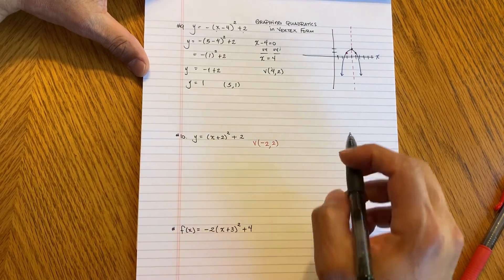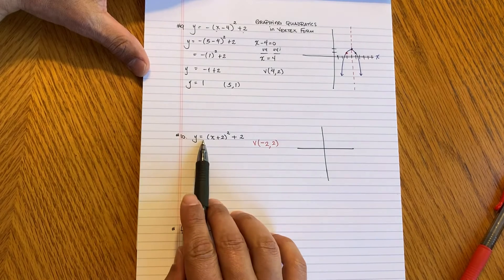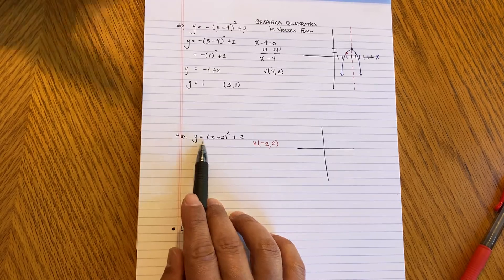Just very essence right here. Now, the other thing that you should think about is it going to open upward or downward? And you got to look right here in the front. And there's nothing there. So it's a positive 1 in essence.